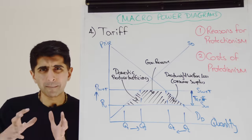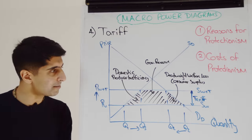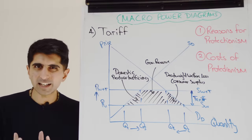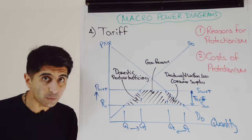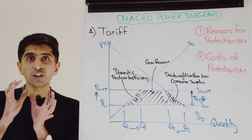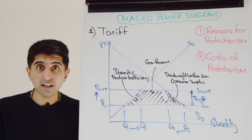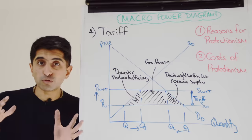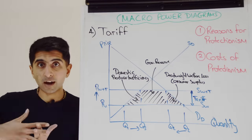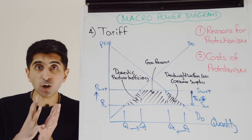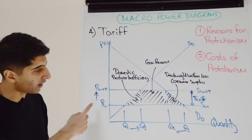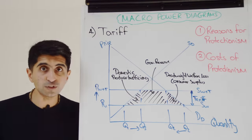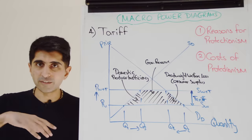Number four — the tariff diagram. This is a king diagram. No doubt you've drawn it many times, but there are three highlighted areas most likely to be relevant in essays. You've got to know this diagram inside out. It links to reasons for protectionism: infant industry protection, protection against dumping, protection against unemployment, tariff revenue for the government, and reducing a trade deficit by squeezing imports. But also use this diagram to back up the costs of protectionism — higher prices, lower consumer surplus, deadweight loss, lower quantity and choice, impact on living standards, and domestic producer inefficiency.